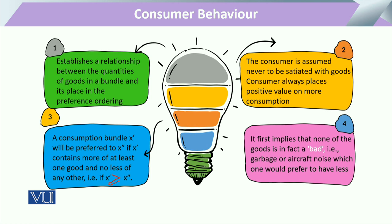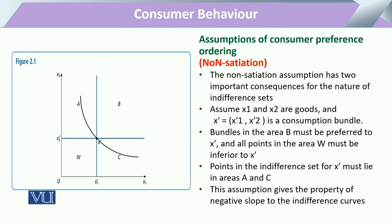جو satiation کے way میں دیکھیں تو جس commodity کی quantity زیادہ ہوگی، consumer اسے ہمیشہ زیادہ prefer کرے گا۔ اب ایک graph draw کر رہے ہیں جس میں x-axis پر ایک commodity اور y-axis پر دوسری commodity draw کی گئی ہے۔ ان دونوں commodities کا point of intersection وہ combination یا bundle ہے جو consumer نے prefer کر لیا ہے، اور اس پر ایک indifference curve A, B, C کی طرح draw کیا گیا ہے۔